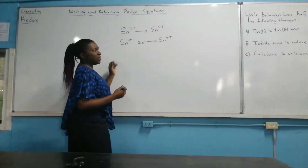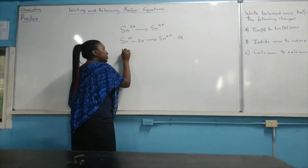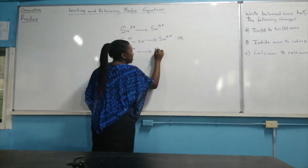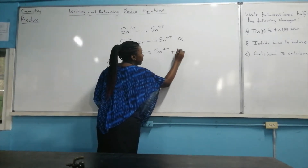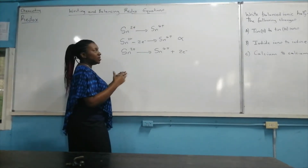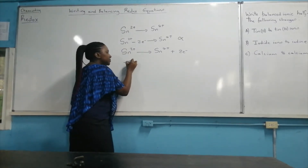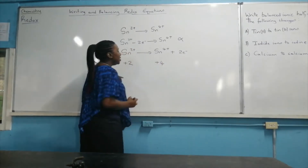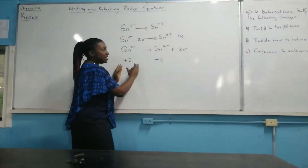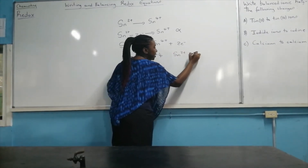But can we show it like this? No. It is incorrect to write electrons being subtracted. So we have to rewrite the equation to show that Sn²⁺ will form Sn⁴⁺ and give off two electrons in the process. The oxidation number of tin goes from plus two to plus four. Because the oxidation number is increasing — getting more positive — oxidation is taking place. So Sn²⁺ is being oxidized.